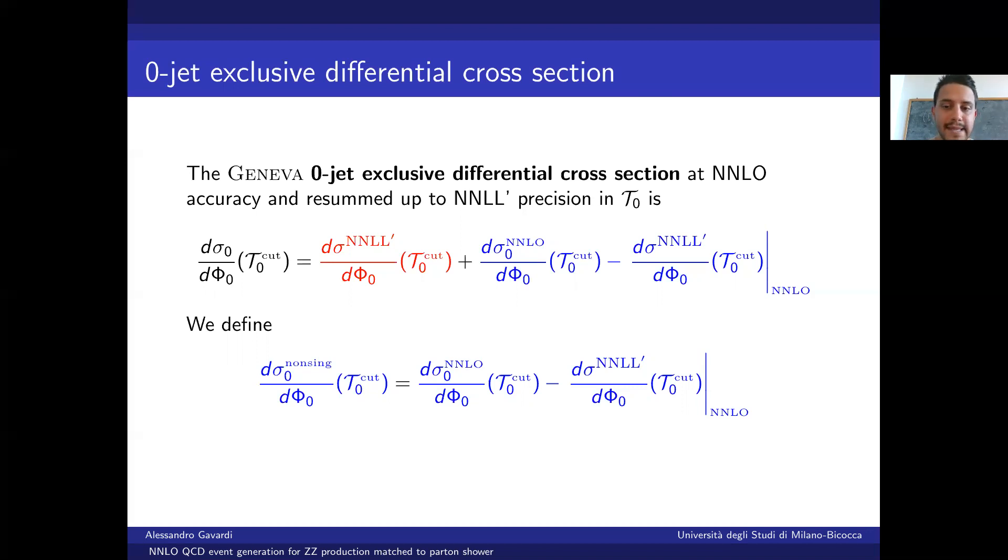In order to make it satisfy these two properties, we adopt an additive approach by basically adding the cross section coming from resummation to the one coming from a fixed-order calculation. In order not to double count, we need then to subtract the expansion of the first term up to order alpha_s squared. We observe that these last two terms are separately divergent when tau0 cut approaches zero, but their difference is not.